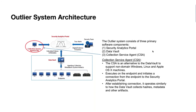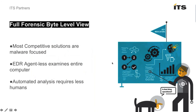The collection service agent (CSA) is an alternative to the data vault to support non-domain Windows and other OS environments like Linux and macOS. It executes on the endpoint and initiates a connection to the security analytic portal, then operates similarly to the data vault in collecting hashes, metadata, and other artifacts. EDR agentless also provides a full forensic byte-level view, examining the entire computer image — not just malware-focused areas. Automated analysis via machine learning, reputation, and behavior reduces the need for human analysts and enables automation of the process.